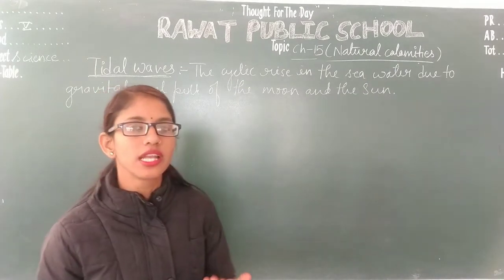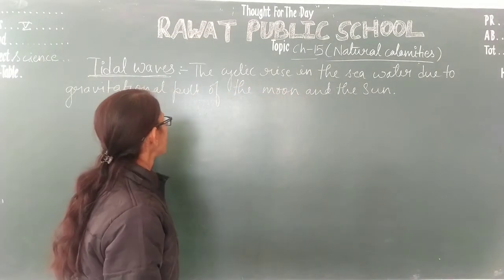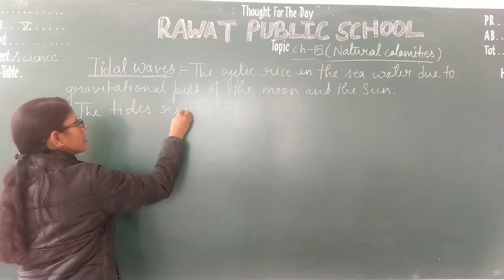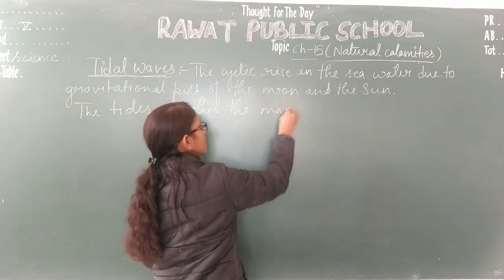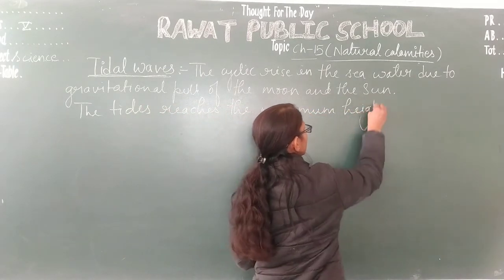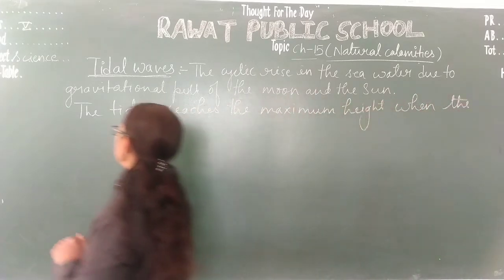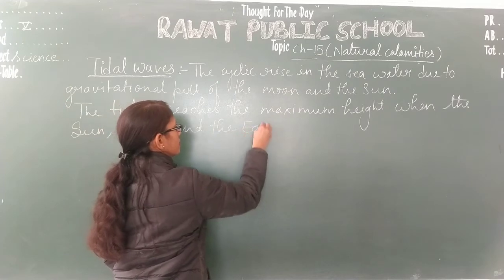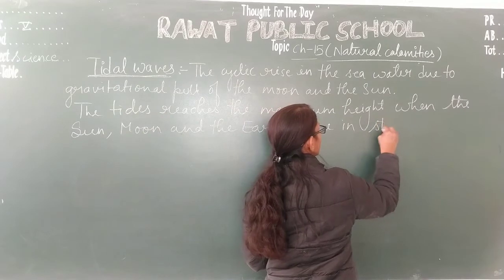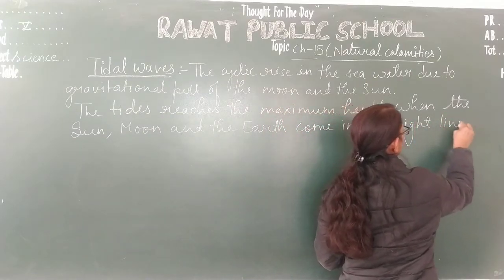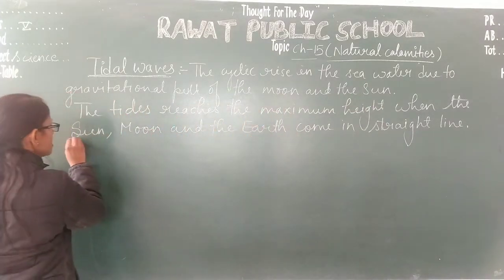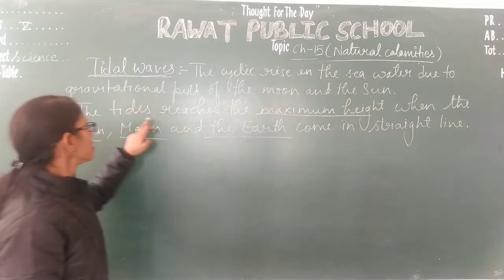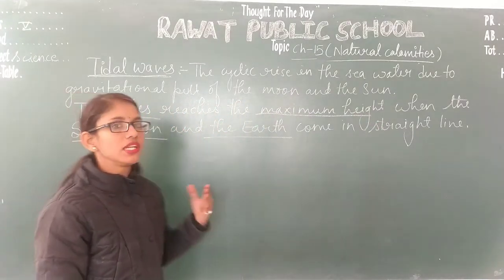The maximum height of water rise occurs when the sun, moon, and earth come in a straight line, which happens at the time of a lunar eclipse. At that time there is a maximum rise in the height of sea water.